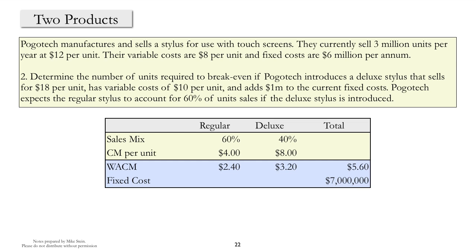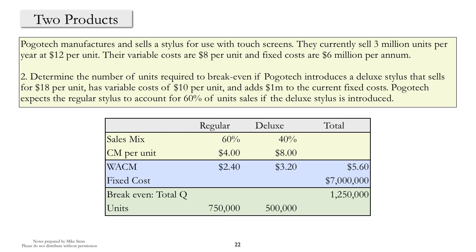There was an additional fixed cost of $1 million in order to make the second product, so total fixed costs have gone from $6 million to $7 million. Therefore, we can calculate the total breakeven quantity as 1,250,000 units — 60% of which are regular, or 750,000 units, and 40% of which are deluxes, or 500,000 units.